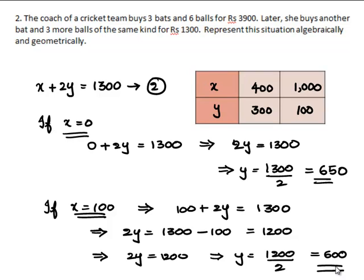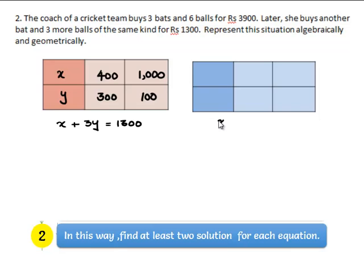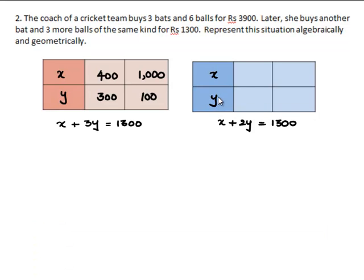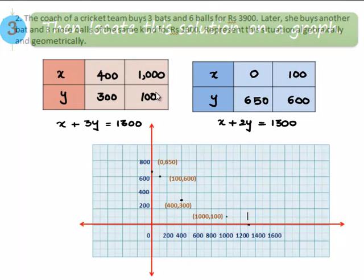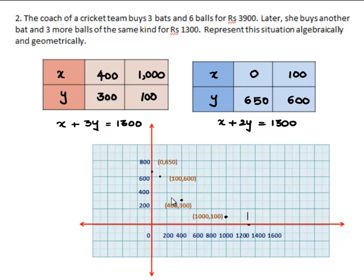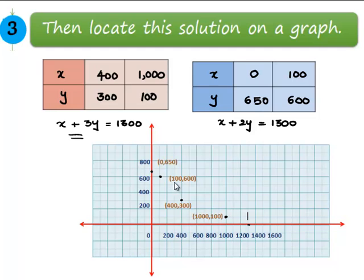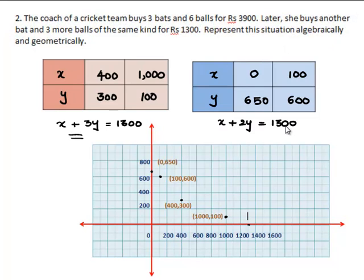Let us tabulate these values also. From equation X + 2Y = 1300: when X = 0, Y = 650, and when X = 100, Y = 600. Now, by using both tabular forms, let us plot a graph. The point (400, 300) and (1000, 100) are plotted and joined to get the straight line X + 3Y = 1300. The points (0, 650) and (100, 600) are joined to get the straight line X + 2Y = 1300.